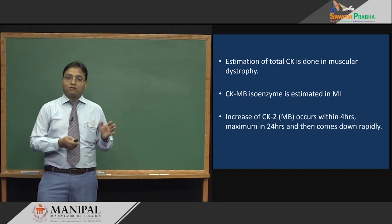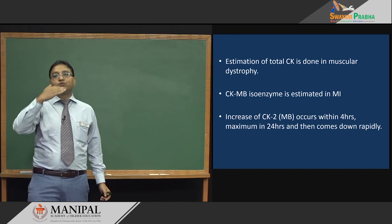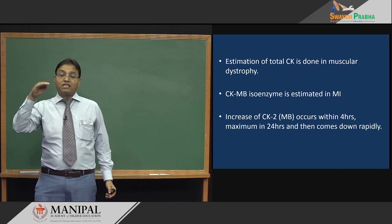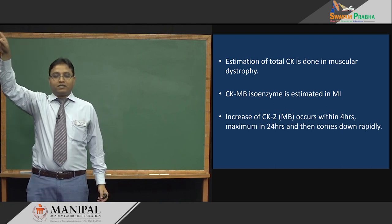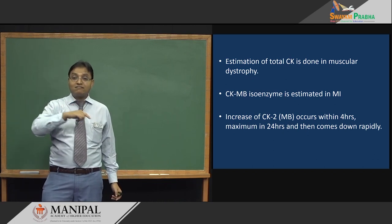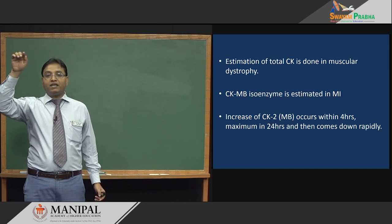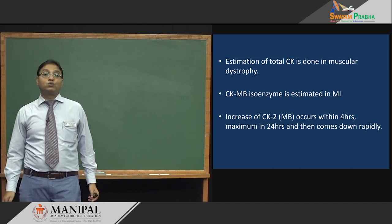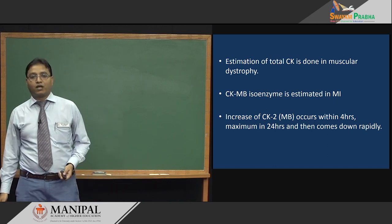In MI (heart attack), only CK-MB is estimated since it is specific to heart muscle. CK-MB starts increasing after 4 hours of MI and reaches its peak value at around 24 hours, after which it rapidly comes down.